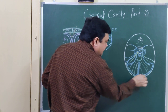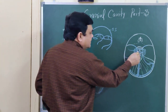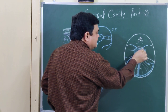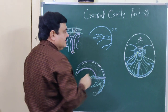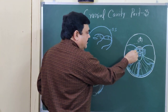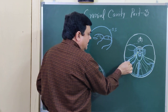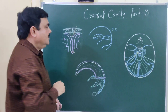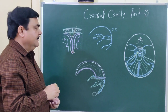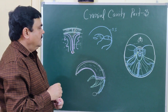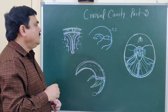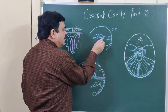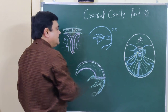The paired sinuses are: superior petrosal sinus, inferior petrosal sinus, sigmoid sinus, transverse sinus, cavernous sinus, and sphenoparietal sinus. Here is also the petrosquamous sinus. These are the paired sinuses. This covers the different dural venous sinuses, including the superior and inferior petrosal sinus.